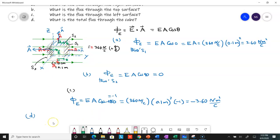We can say the total flux—the net flux through the cube—is just the sum of all the fluxes: 3.6 plus negative 3.6.